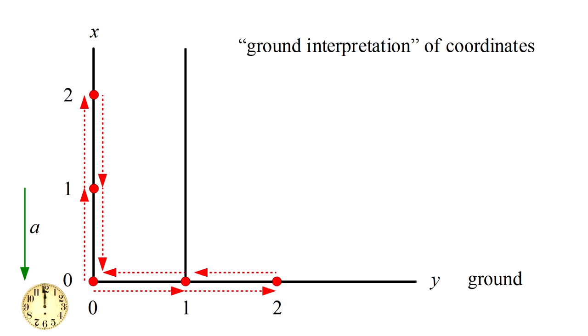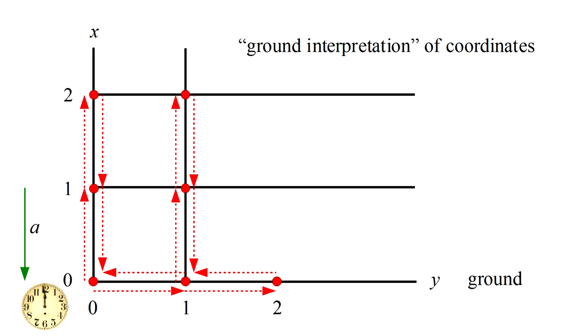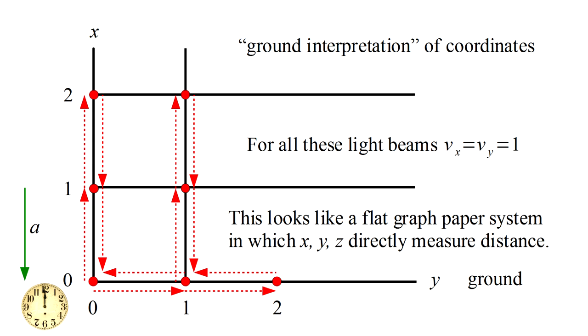Now we move the light source to y equals one on the ground and point it upward. By the same process, we can again fix x equals one and two and so on. Continuing on, we can directly measure the distance to any point on the ground and any point in space perpendicular to the ground. These measurements will correspond to the x, y, and z coordinates, and our coordinates will seem to correspond to a familiar flat graph paper type coordinate system.